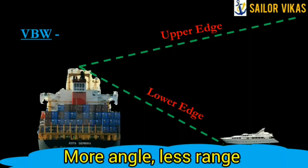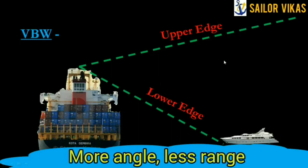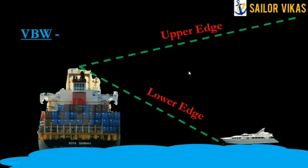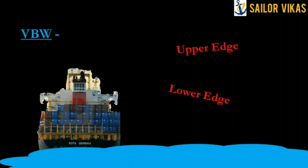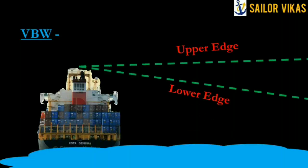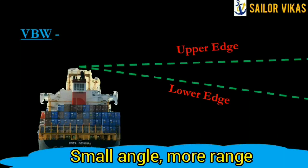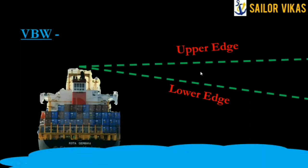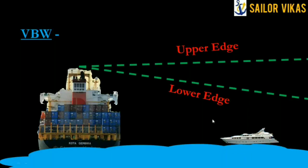In the video, when water was in jet mode it traveled a longer range. Similarly, when the radar beam angle is smaller, the energy is more concentrated and the pulses travel longer range. However, the disadvantage of a small angle is that small targets may be missed, because the beam is focused at long range and ignores nearby small targets.